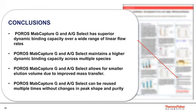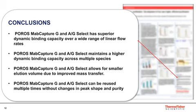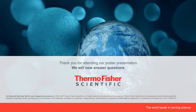In closing, the new POROS MABCapture resins presented in this talk showcased multiple advantages. POROS MABCapture G and AG showed superior dynamic binding capacity over a wide range of linear flow rates and across multiple species. These resins allow for smaller elution volumes due to the unique porous structure of the POROS bead, which allows for better mass transfer. MABCapture G and AG can be reused multiple times without changes to the peak shape or purity. And with that, I'll take any questions.